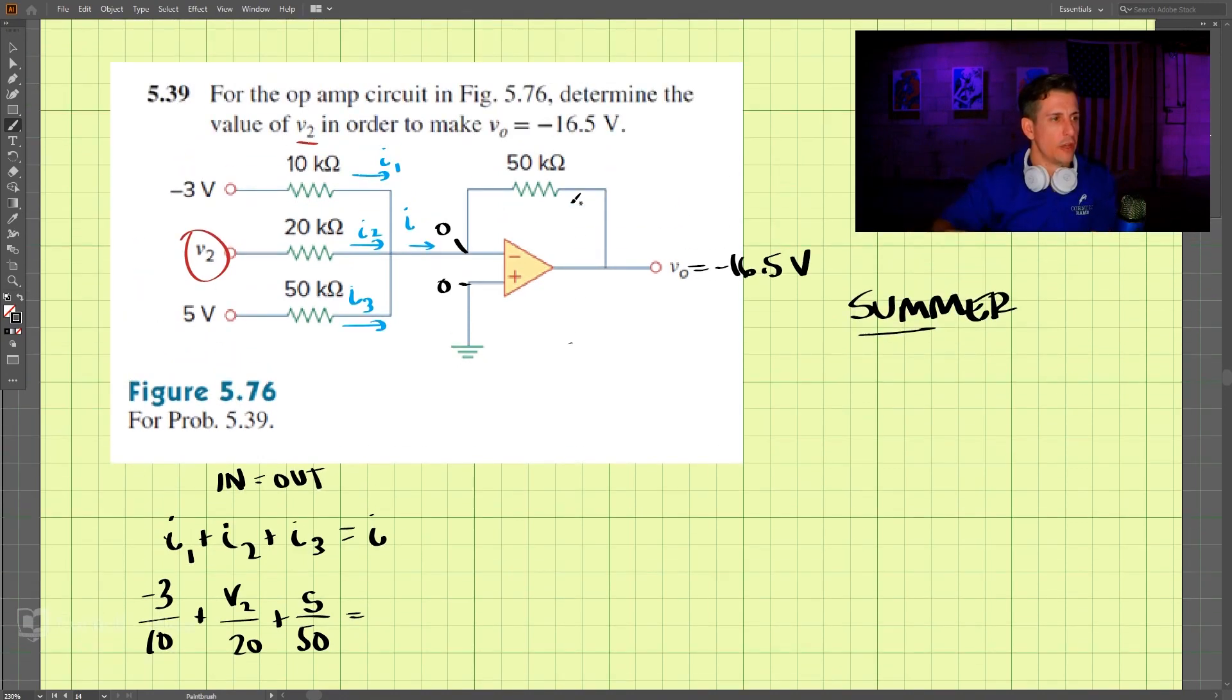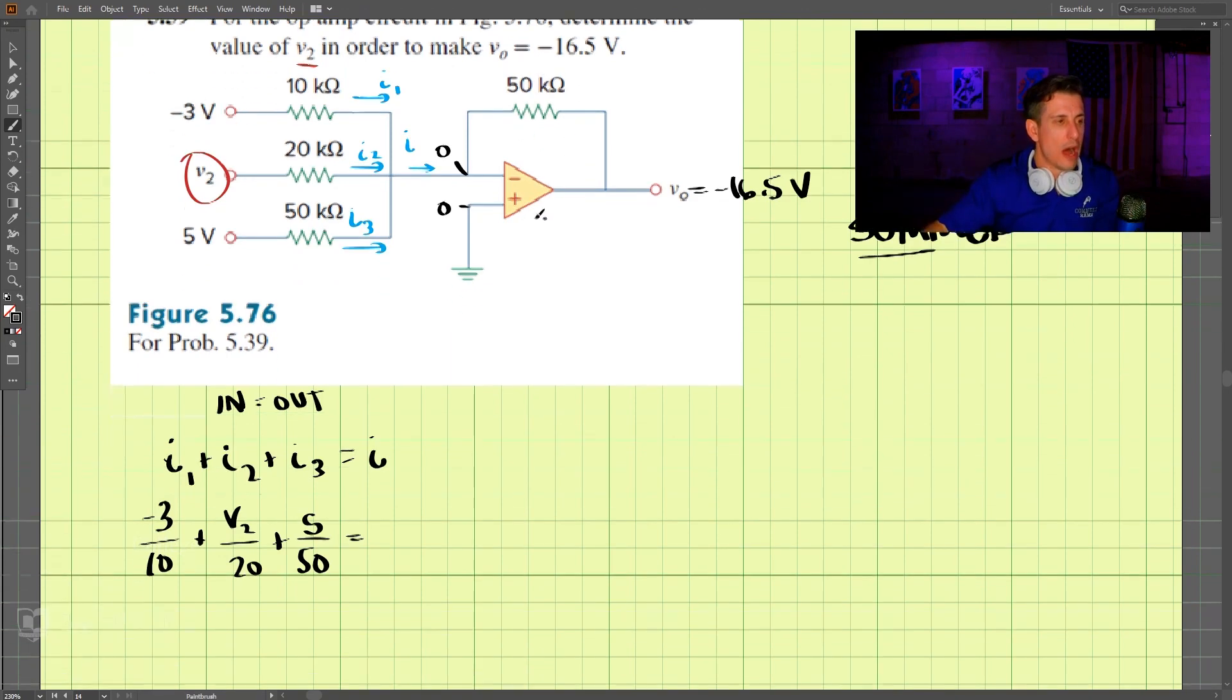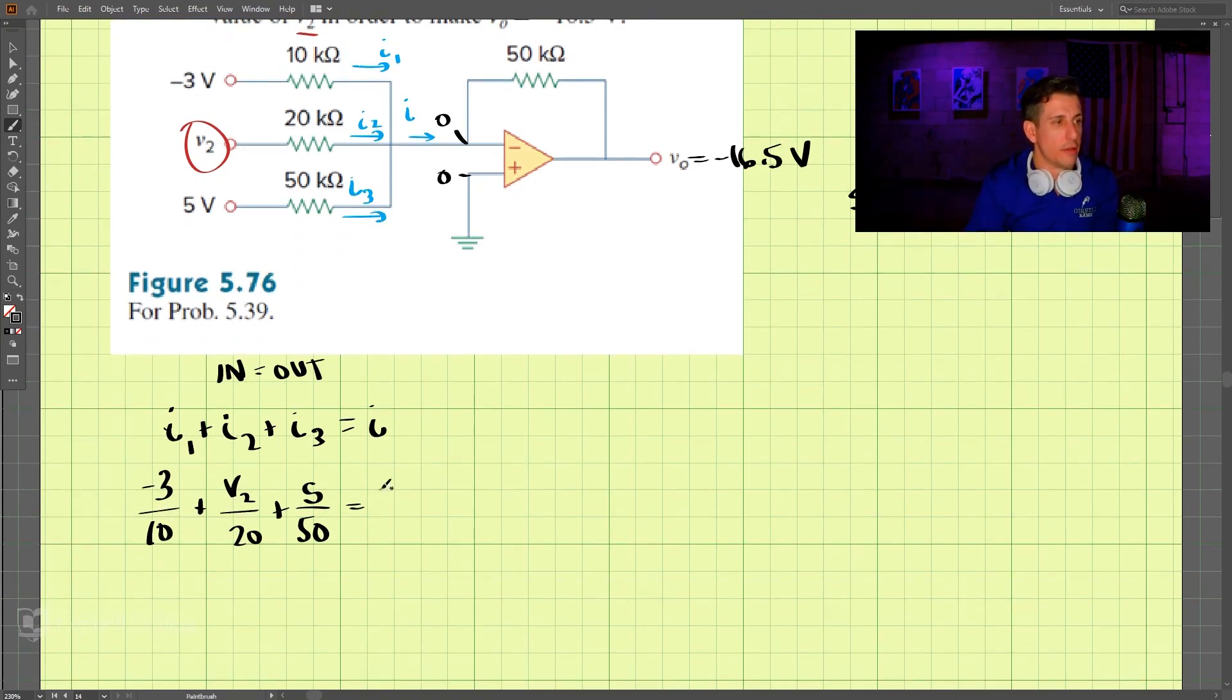And remember that I is going to go through this resistor here. So I is nothing more than zero volts minus V0. We're looking at the current here, zero minus V0, which is zero minus negative 16.5 divided by this resistance 50.